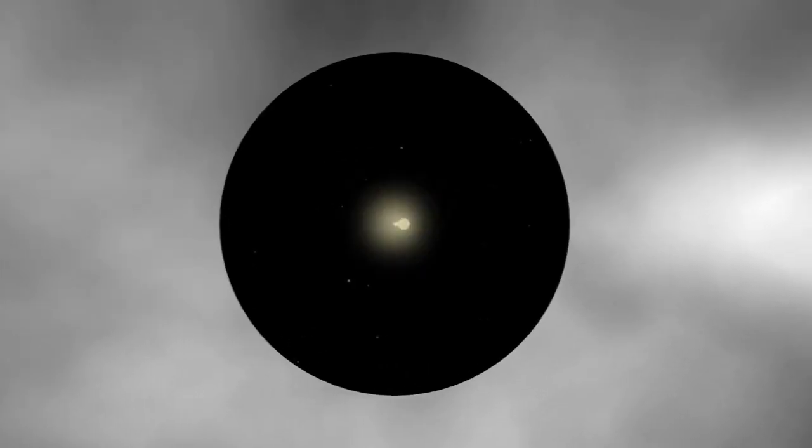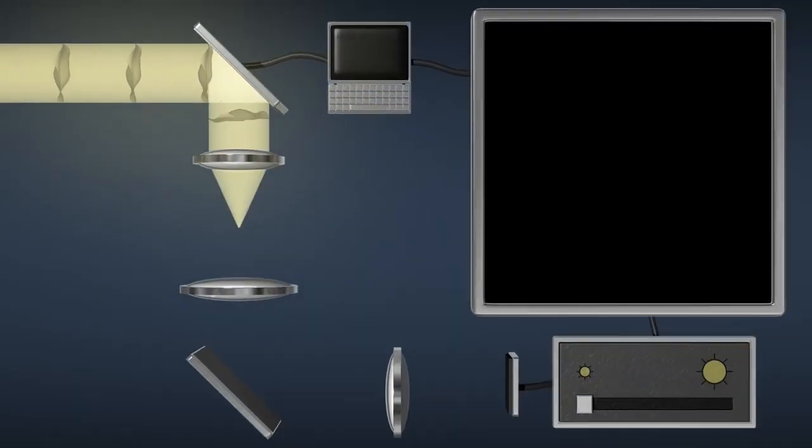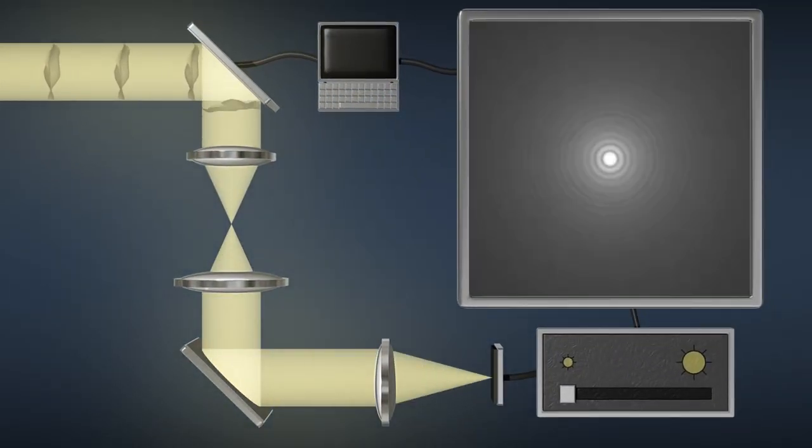By using a space telescope with a coronagraph to separate starlight from planet light. As the star's light passes through the telescope's large mirrors, it picks up small distortions. Diffraction adds concentric rings to the image we see.